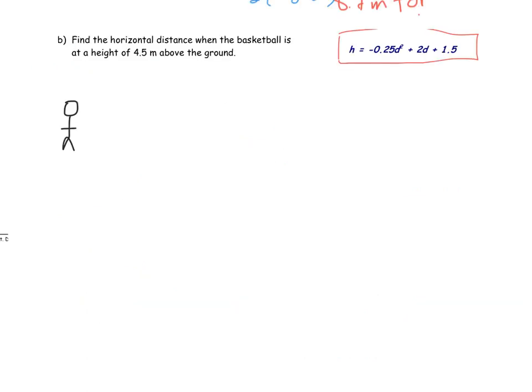Let's look at the second half of this problem. The second half says: find the horizontal distance when the basketball is at a height of 4.5 meters above the ground. So the basketball is going to go up and then come down again. There's going to be a point in its flight where it's going to be at a height of 4.5 meters. And so really we want to know what D is. What is the value of D when H is 4.5?